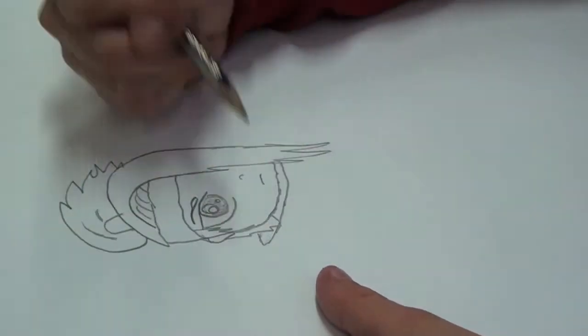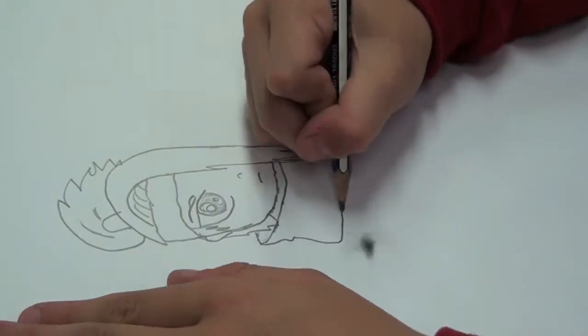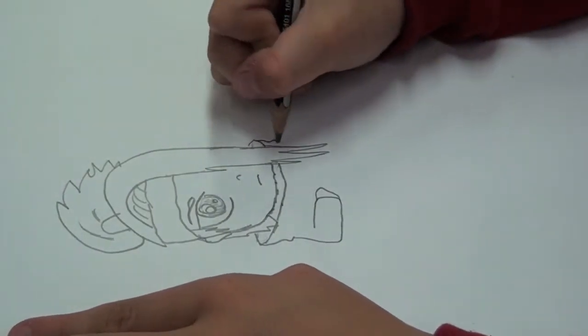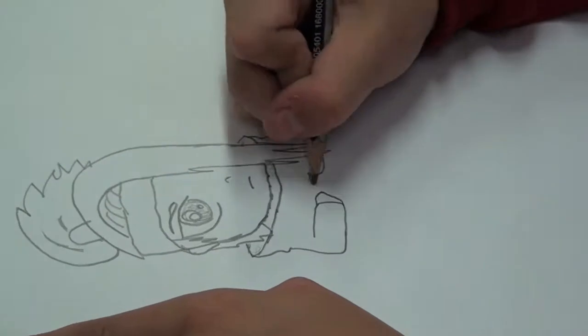Then draw some more hair on top of his head, then draw a little brown hair tie and a ponytail.